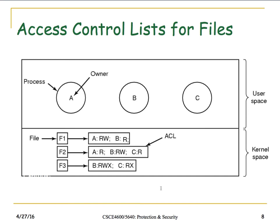A particular process has an owner. In user space we look at files; in kernel space we look at the access control list to see what different processes can do. For example, for file one, process A has read-write access and process B has read-only. If process C tries to access it and there's no entry, access is denied, preventing any breach.